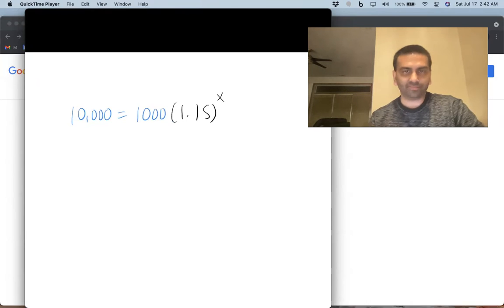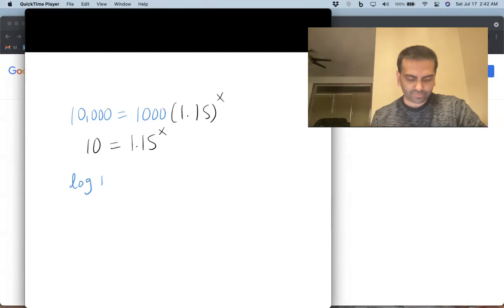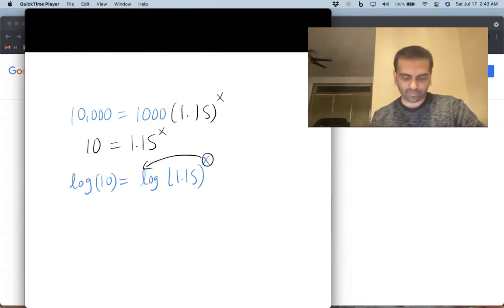So first up, we can divide both sides by 1,000. So 10,000 over 1,000 is just 10. So we have 10 equals 1.15 to the x. And now to solve for x, in general, whenever you want to solve for something that itself is in an exponent, you got to take the log of both sides, doesn't matter if you do log or natural log. But if you do log of both sides, this is just log of 10, and this is the log of 1.15 to the x. And the whole point of that is that now you can simplify this where the x comes down. So this is just x times log of 1.15.